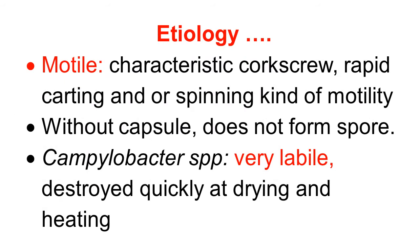Continuing with the etiology: the motility is due to a polar flagellum — one flagellum at one pole — and this provides a variety of motility types: cork-screw type, rapid darting type, or a spinning kind of motility. This motility provides transport of the organism from the vagina, through the cervix, to the uterus, spreading the infection. The organisms are non-capsulated and non-spore-forming. Campylobacter are very labile to heat and are destroyed quickly by drying and heating.